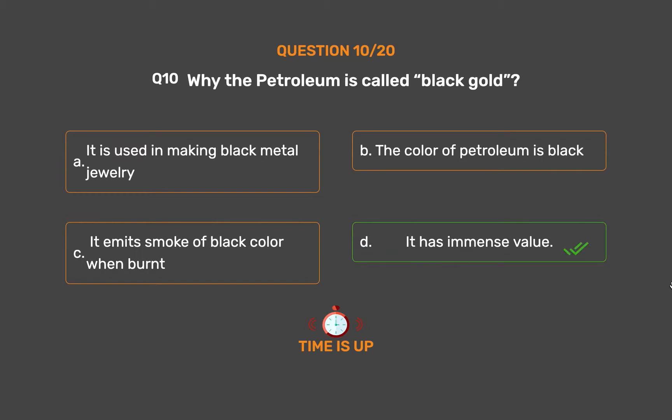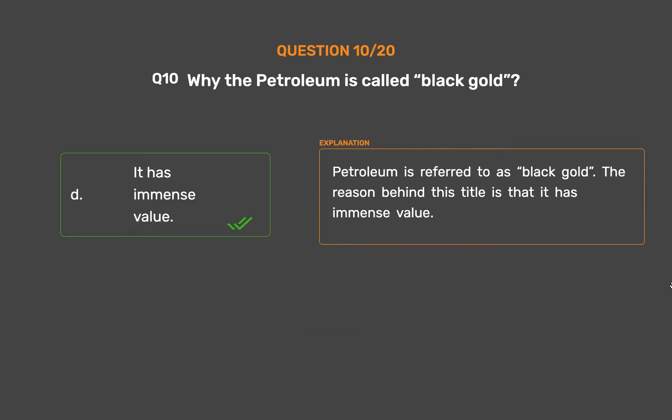The correct answer is Option D: It has immense value. Petroleum is referred to as black gold because it has immense value.